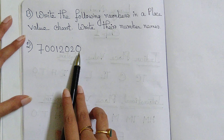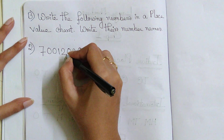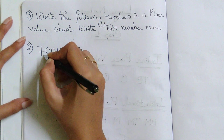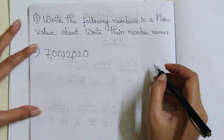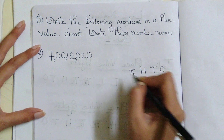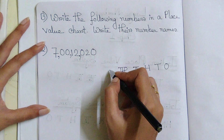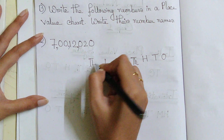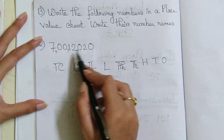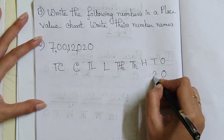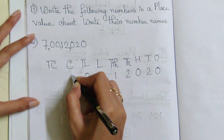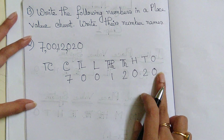Let's build the place value chart: 1, 10, 100, then comma, 1000, 10,000, lakh, 10 lakh, crore, 10 crore. I will write the number from right to left: 0, 2, 0, 2, 1, 0, 0, 0, 7. So this is the place value chart.